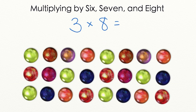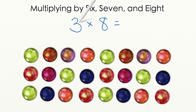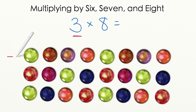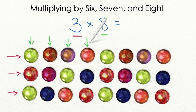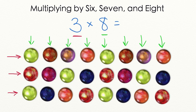Let's talk about another strategy that you can use to multiply. We are going to use this array to multiply 3 times 8. Your first number is going to tell you how many rows you are going to need in your array. So we are going to be making 3 groups of 8, which means we need to have 3 rows: 1, 2, 3, 4, 5, 6, 7, 8.